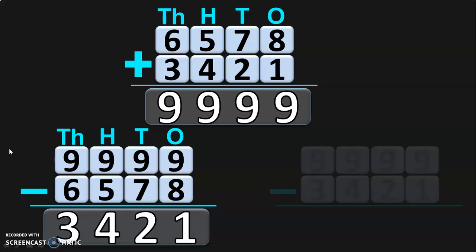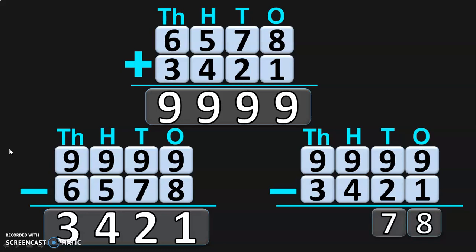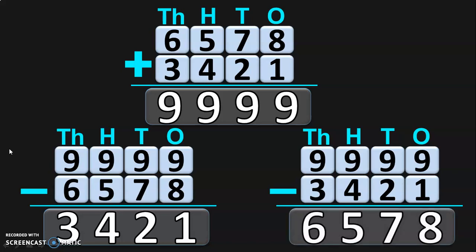Let us take the other way round. What happens if we take away 3421 from 9999? Write down the place values and begin the subtraction from the 1s place. 9 minus 1 in the 1s place is 8. 9 minus 2 in the 10s place is 7. In the 100s place, 9 minus 4 is 5. And in the 1000s place, 9 minus 3 is 6. So the answer is 6578 — if we take away 3421 from 9999, we get the other number 6578.